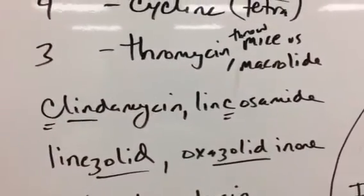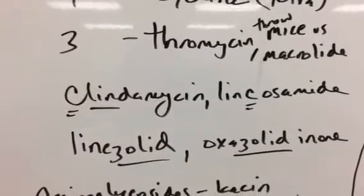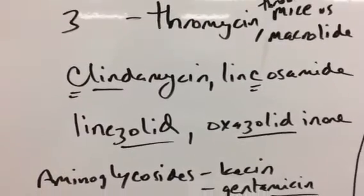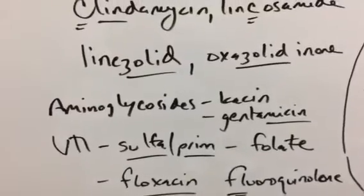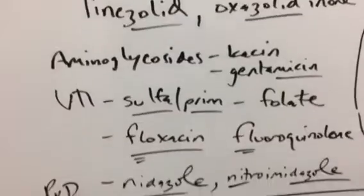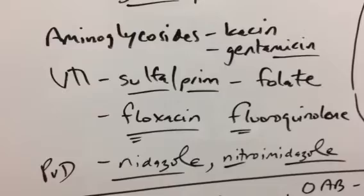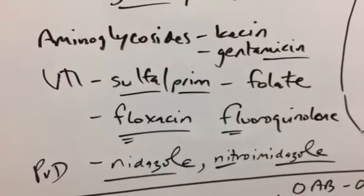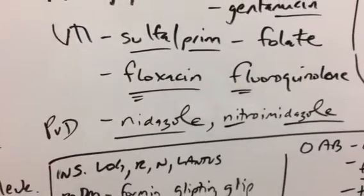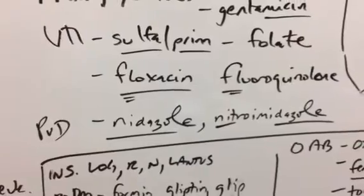Clindamycin, a lincosamide. So there's some similarities there. The lin and the C, and then lincosamide. And then the zolid from linezolid, which is an oxazolidinone antibiotic. The aminoglycosides ending with kanamycin or gentamicin. I can't really use that stem with gentamicin. UTIs, sulfa, and prim for the folate. Dihydrofolate reductase inhibitors. And then the FL from ciprofloxacin with the FL from fluoroquinolone. And then for peptic ulcer disease, nitazole from metronidazole with the nitroimidazole.